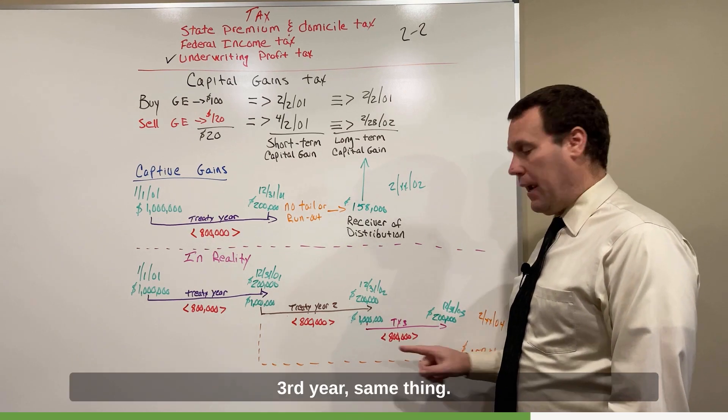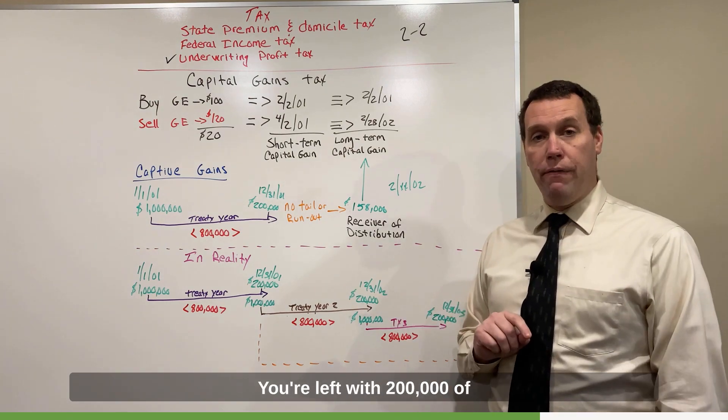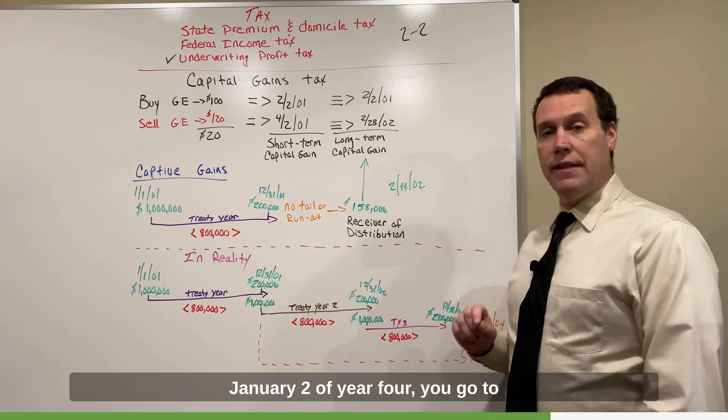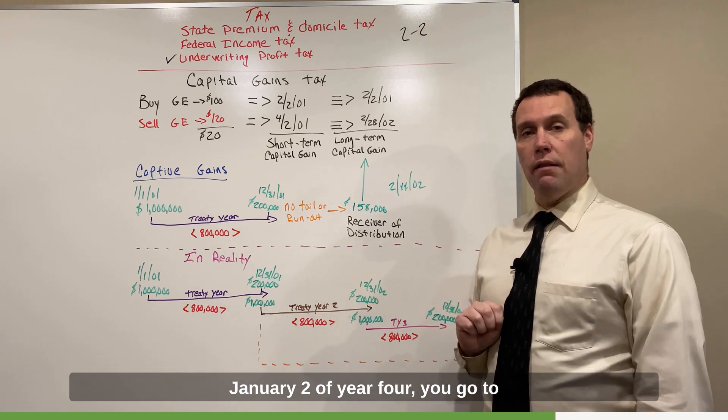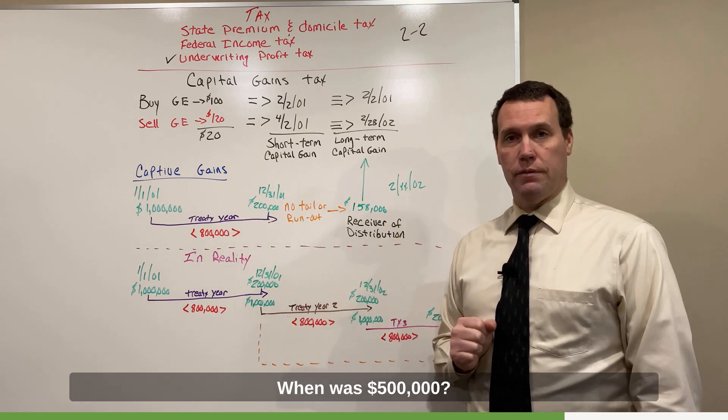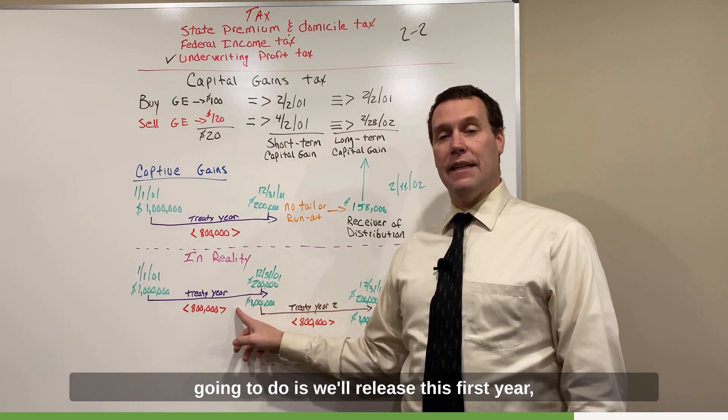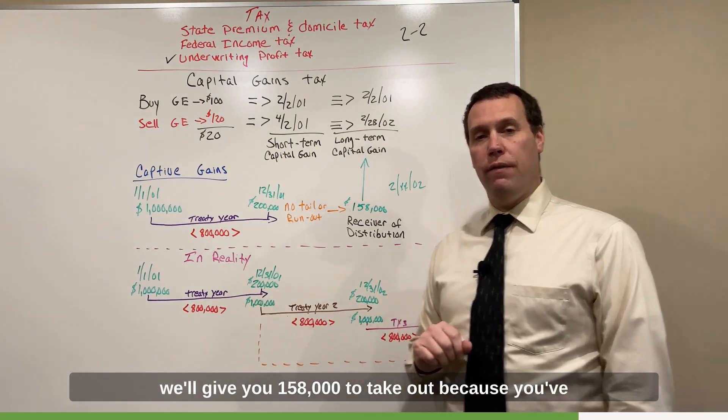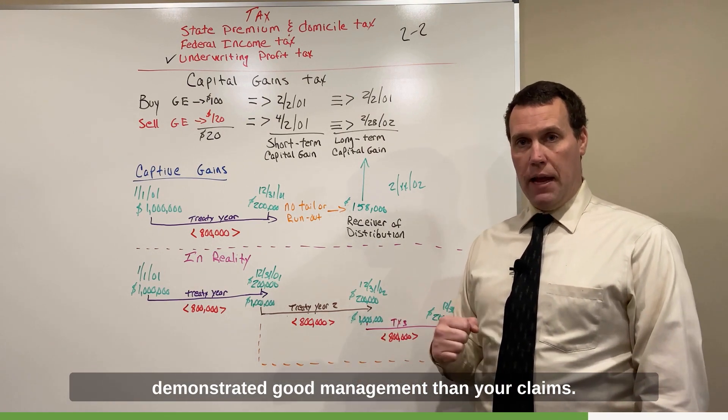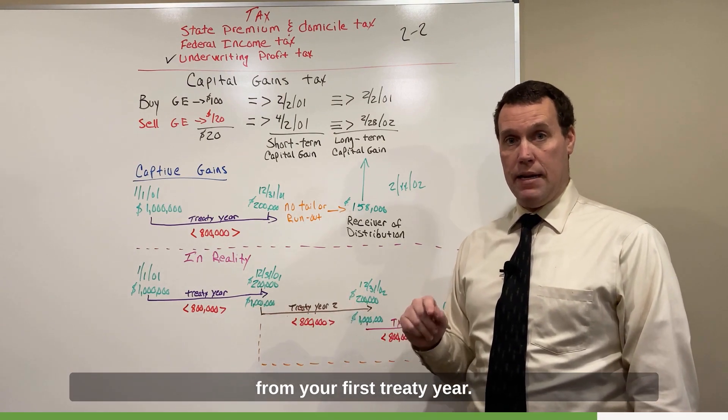Third year, same thing. Million dollars worth of premium, $800,000 of expenses and claims. You're left with $200,000 of profit, $158,000 of free money. January 2nd of year four, you go to the regulator and say, I want my money. It's now almost $500,000. The regulator is going to say, nah, what we're going to do is we'll release this first year. We'll give you $158,000 to take out because you've demonstrated good management in your claims. We can release this $158,000 from your first treaty year.